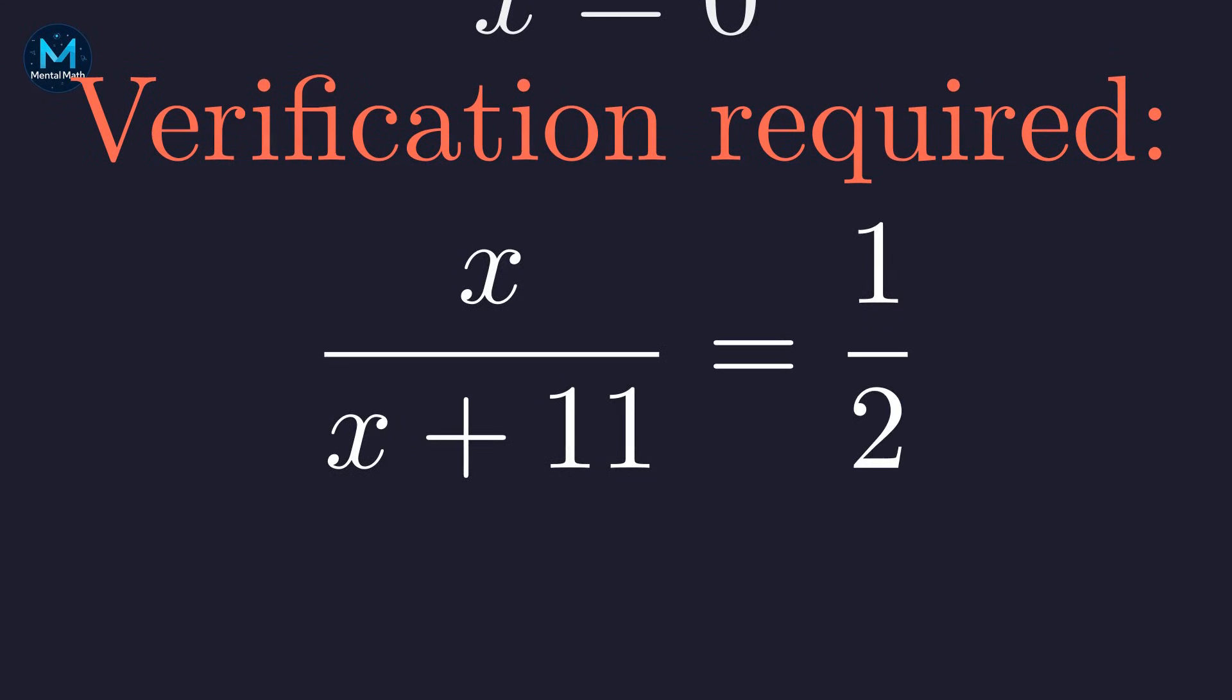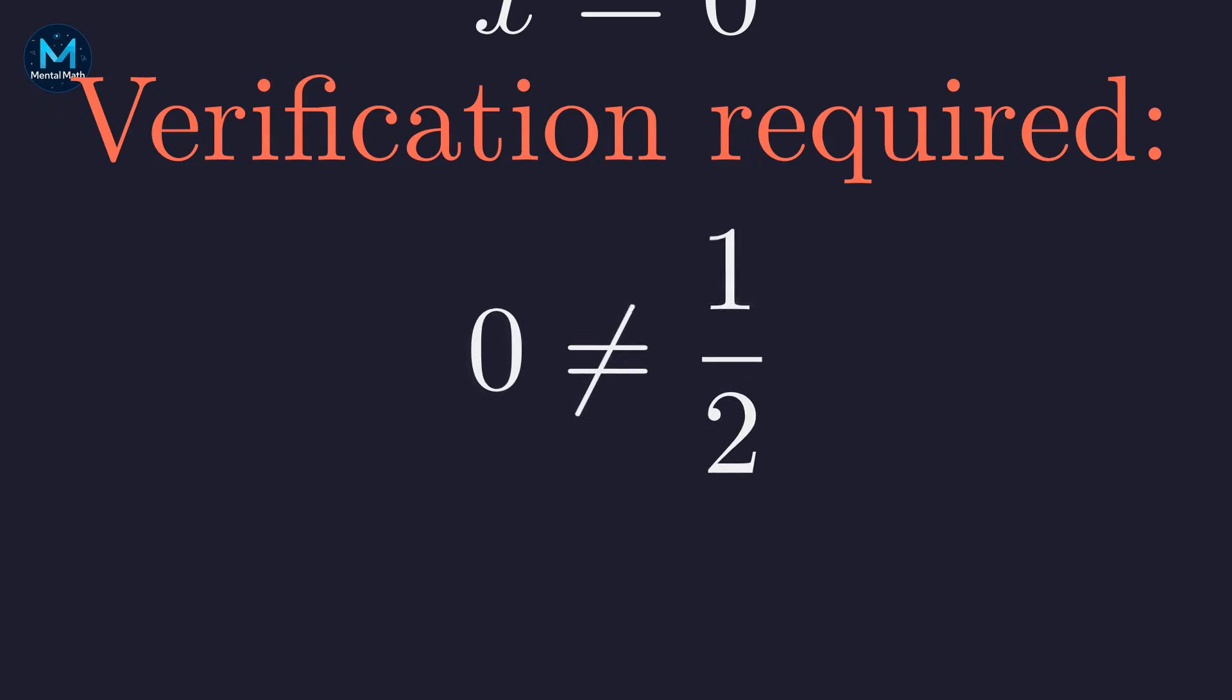Does x over x plus 11 equal 1 half when x is 0? Plugging in x equals 0, we get 0 over 11. That's 0, not 1 half. So x equals 0 doesn't work.